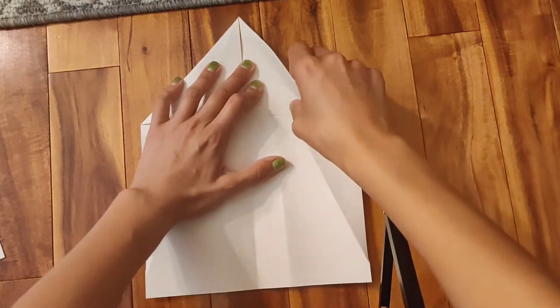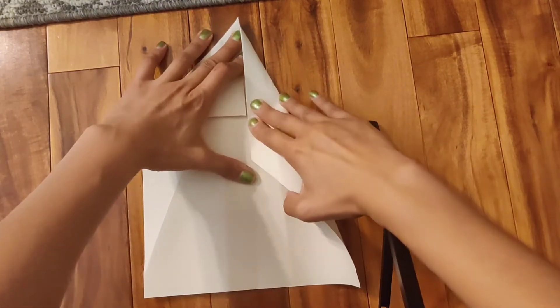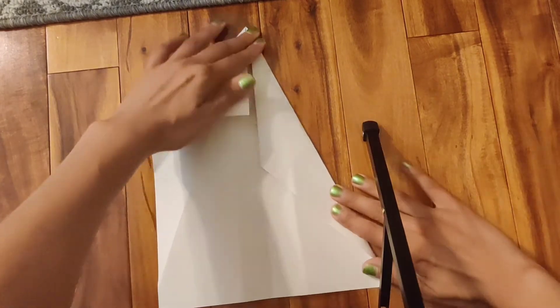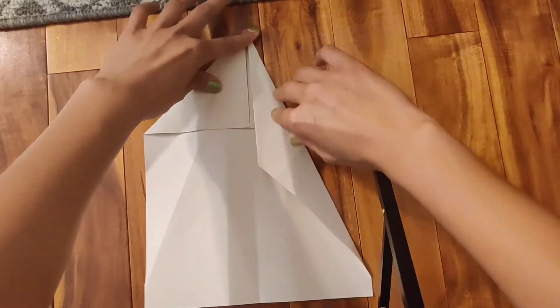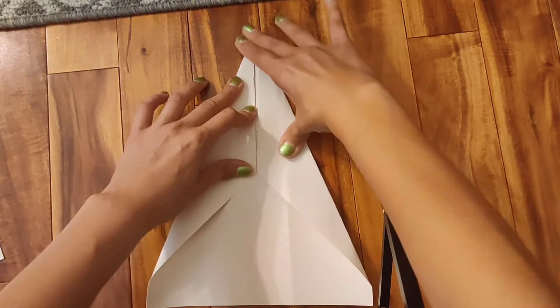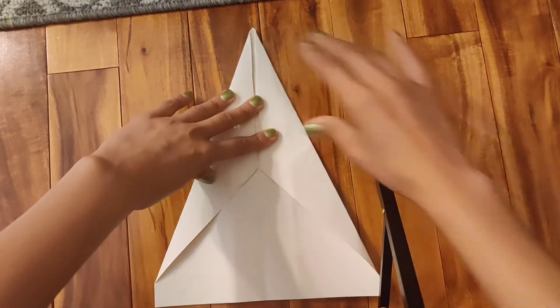Now for this paper airplane, we're going to fold it once again towards the middle, all the way to the middle, just like that. So you have it like that. And you're going to do the same to the other side. Fold it all the way to the middle. There you go.